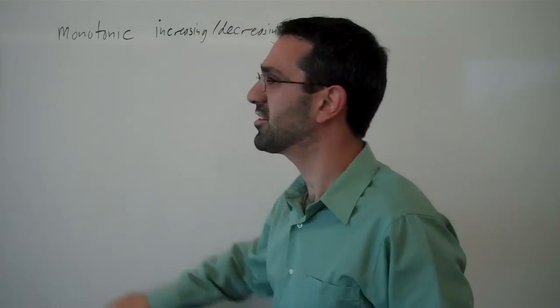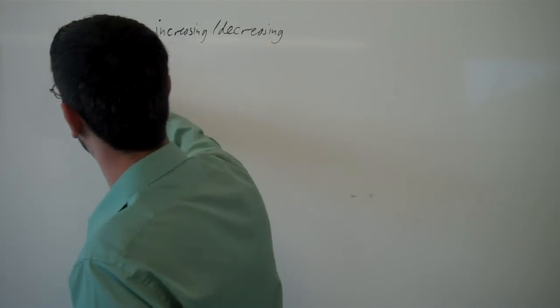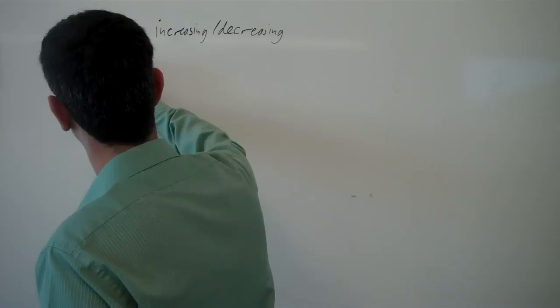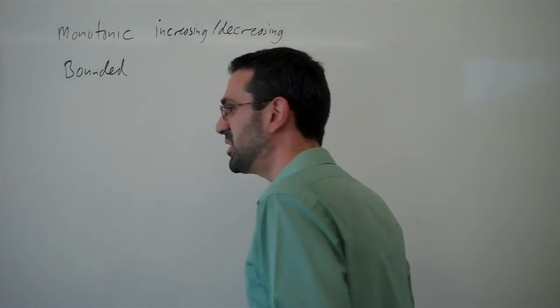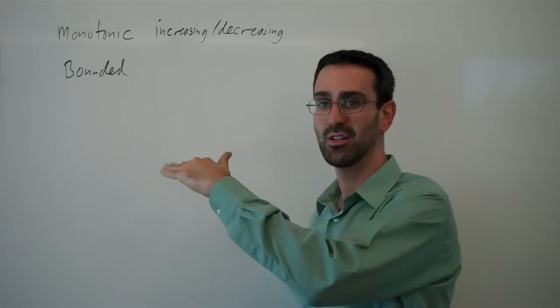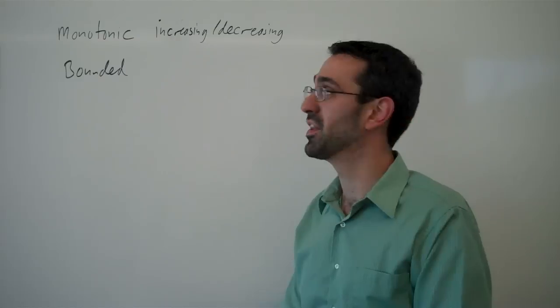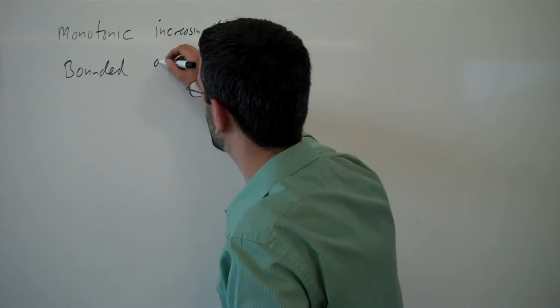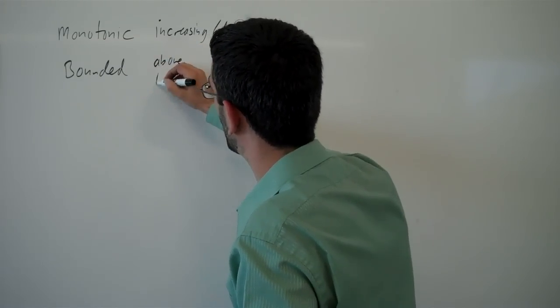So then the other concept we're going to talk about is the idea of bounded. So a sequence is bounded if there is some value that it never gets higher than or some value it never gets lower than. That's either bounded above or bounded below.